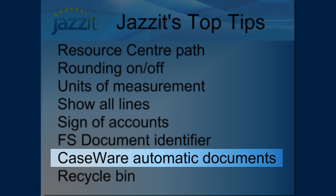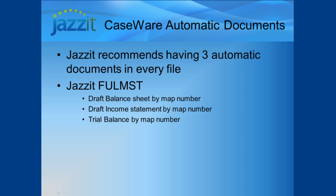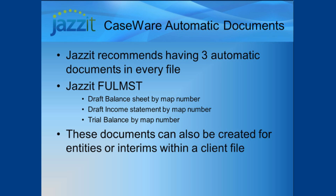Caseware Automatic Documents. JASIT recommends having three automatic documents in every file. These can be found in the FullMAST file: Draft Balance Sheet by Map Numbers, Draft Income Statement by Map Numbers, and the Trial Balance by Map Numbers. These documents can also be created for specific entities or specific periods for interims within a client file.